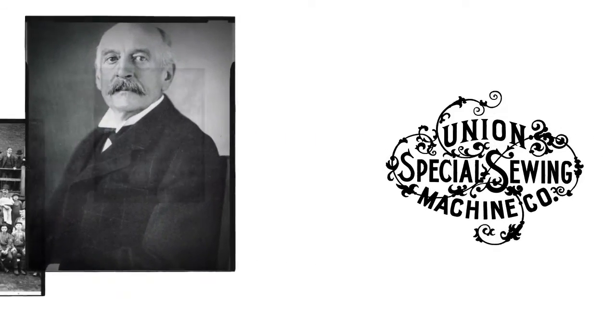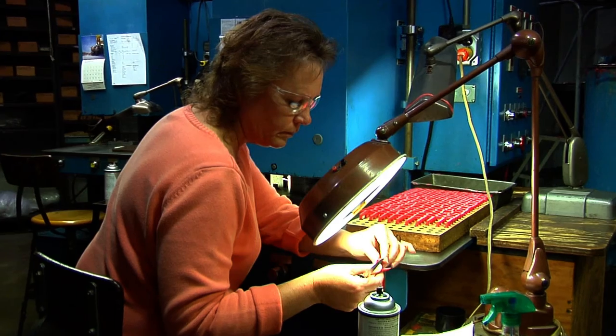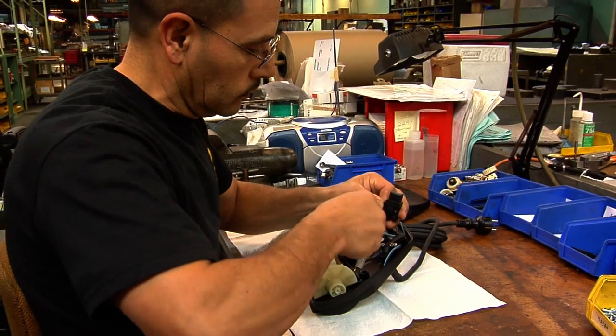Founded in 1881, Union Special was among the very first manufacturers of industrial sewing machines in the United States. These days, it is one of only two companies that are still making sewing machines in America.